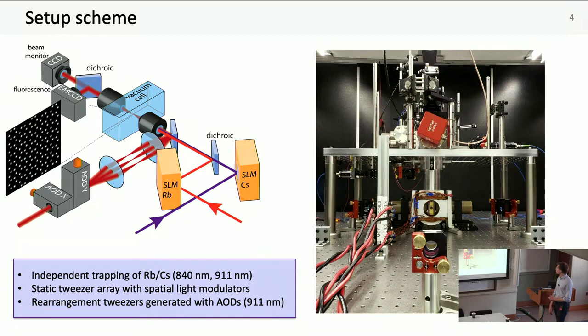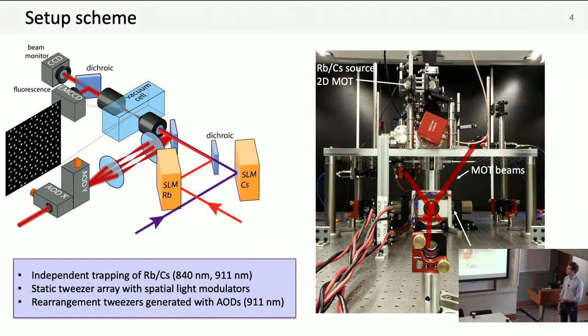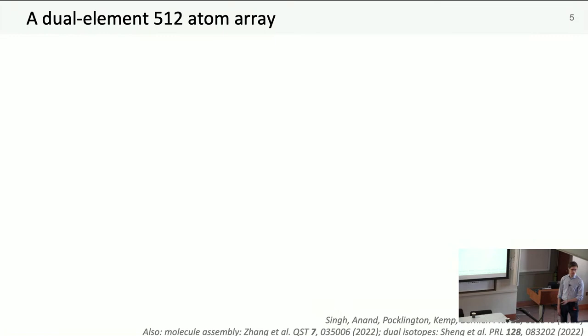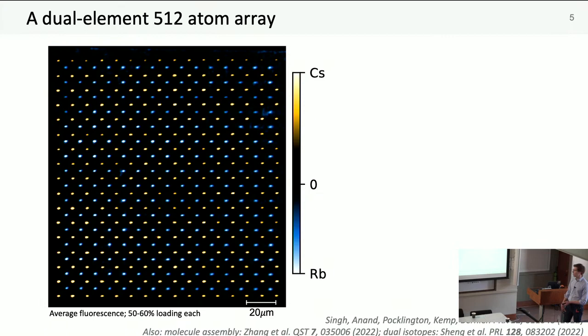This is a now outdated image of how the setup used to look, a lot more optics now, but you can see the key features. We have a 2D source cell at the top, atoms are pushed down into our glass cell, we have a 3D MOT, and you can see our high resolution objectives. With this system we're typically able to trap up to 512 sites.